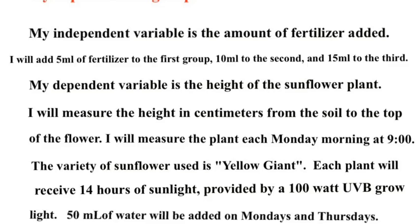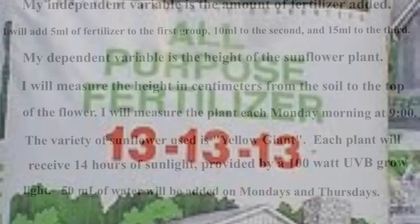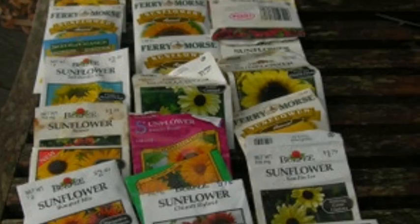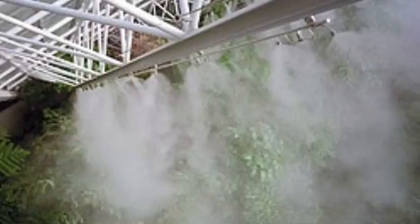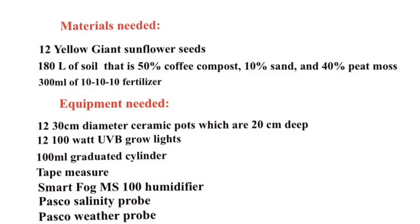My independent variable is the amount of fertilizer added: five milliliters to the first group, 10 milliliters to the second, 15 to the third. My dependent variable is going to be how high I measure it. Even though I'm changing the fertilizer, I'm keeping all the other stuff the same: the type of seeds, the size of the container, the soil mix, the amount of sand and peat moss mixed in with the compost, whether or not insects are present, the amount and timing of watering, how I measure it, the salinity in the soil, and the humidity in the air.